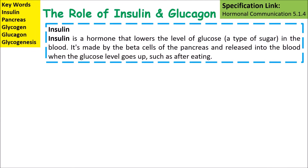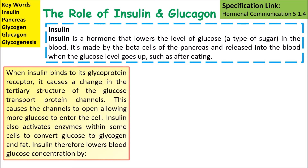Insulin is the hormone that lowers the level of glucose in the blood. It is made by beta cells in the pancreas and released into the blood when glucose levels go up after eating. When insulin binds to a glycoprotein receptor, it causes a change in the tertiary structure of that glucose transport protein channel, causing the channels to open and allowing more glucose to enter the cell.